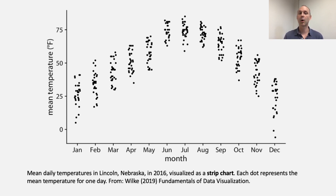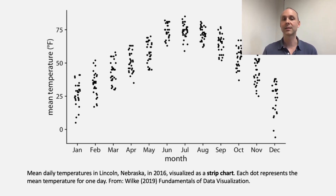Those are relatively warm days. We have about 30 temperatures per month — too many to arrange vertically on one line, but by spreading them out with jittering, it works well. We can see both how much variation there is within a month — every month has relatively cold and warm days — and also the overall shift in temperatures from one month to the next.